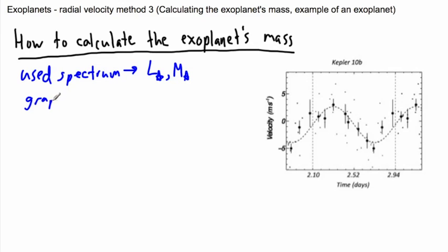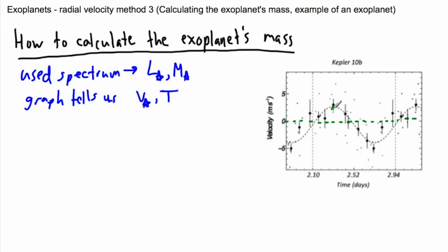That graph to the right here tells us the speed of the star, and also the period of the star and therefore the planet. So if we look at this velocity versus time graph, we can draw a dotted line, and this height — this amplitude of the graph — tells us v star. And the distance from a peak to a peak, or from any equivalent point to the next, tells us the orbital period of the star. Remember, the orbital period of the star is the same as that of the planet, but the velocity of the star is different than that of the planet.